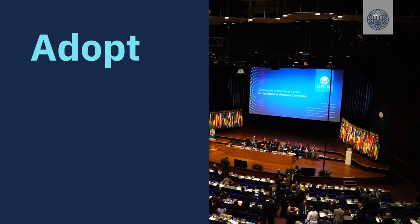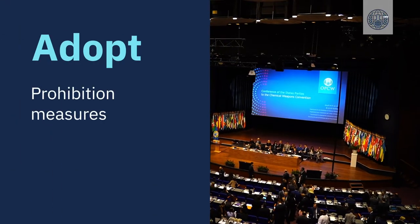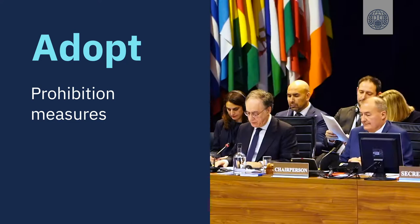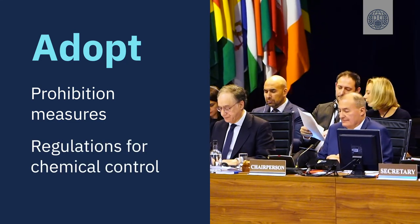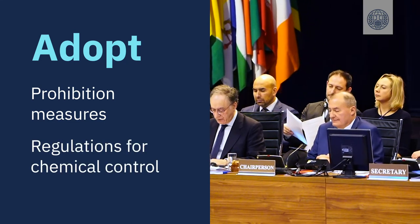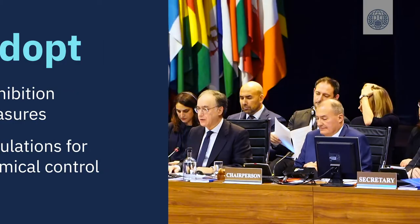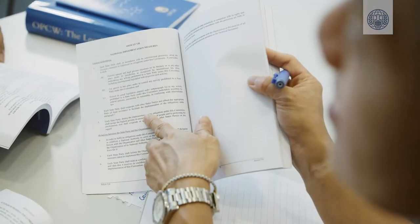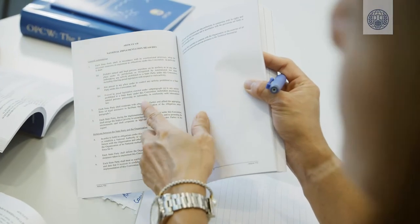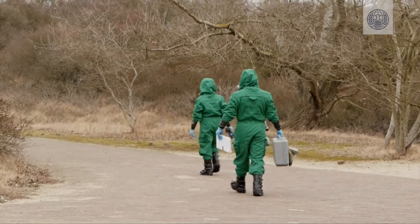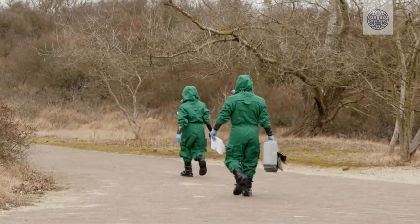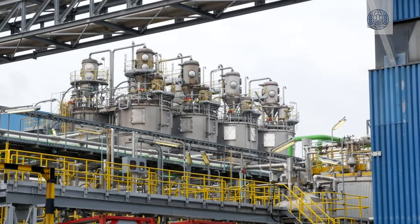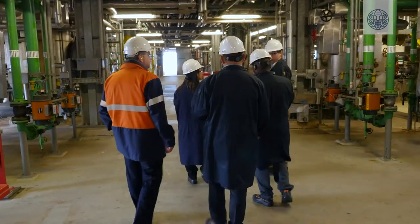This includes the adoption of prohibition measures that make specific activities illegal and regulations that facilitate the Convention's chemical control regimes. Article 7 of the Convention requires Member States to adopt national laws that prohibit individuals and companies from undertaking any activity prohibited by the Convention.